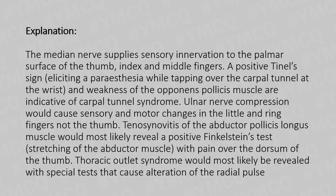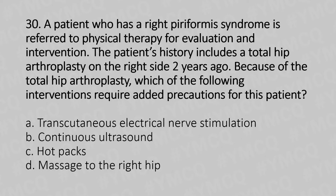Now let's move to our 30th question. A patient who has right piriformis syndrome is referred to physical therapy for evaluation and intervention. Patient history includes total hip arthroplasty on the right side two years ago. Because of the total hip arthroplasty, which of the following interventions requires added precaution for this patient? Option A: transcutaneous electrical nerve stimulation (TENS). Option B: continuous ultrasound. Option C: hot packs. Option D: massage to the right hip.